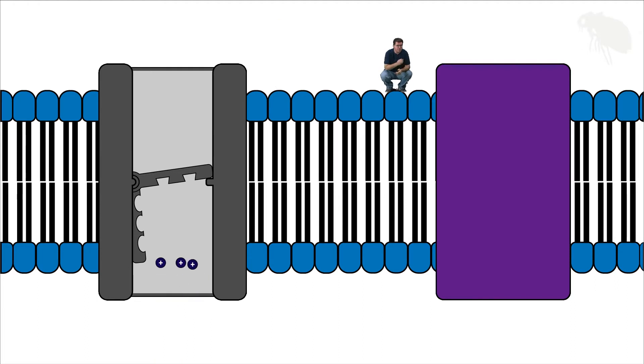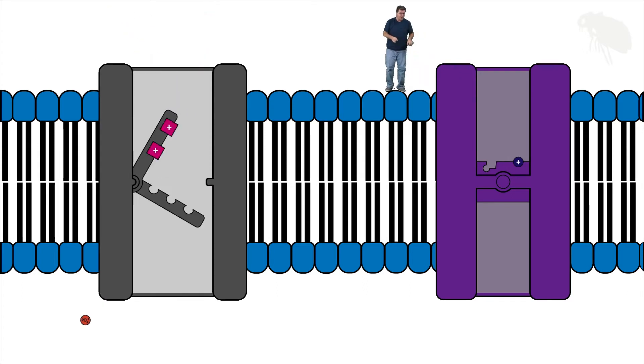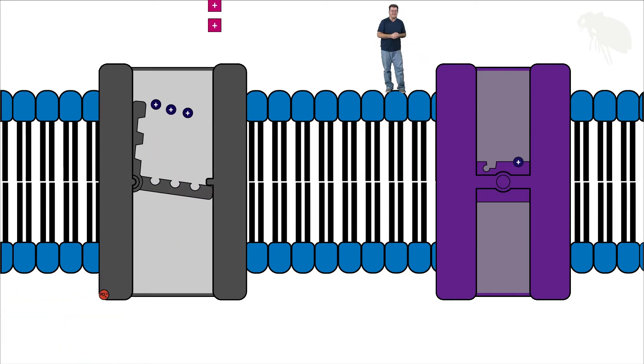Now over here we have a different integral membrane protein. This is what's called a symport. Specifically in this video I'm using a sodium glucose symport. This molecule binds to sodium and allows sodium to translocate through the membrane from high to low concentration. Since that pump over there is keeping sodium concentration in the cell low, this protein is going to bind to sodium and allow it to enter the cell following its gradient. But there's a catch. When this protein binds with sodium, a binding site on it for glucose develops a very high affinity for glucose.